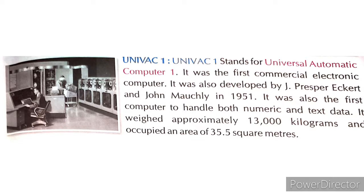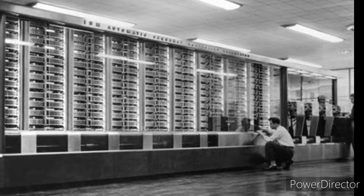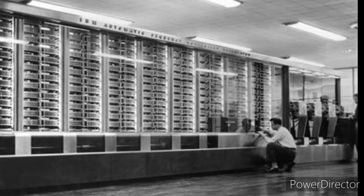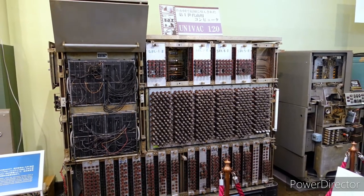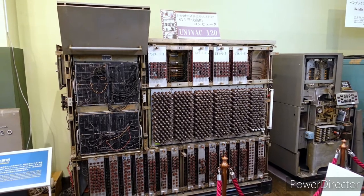UNIVAC 1 stands for Universal Automatic Computer 1. It was the first commercial electronic computer, also developed by J. Presper Eckert and John Mauchly in 1951. It was the first computer to handle both numeric and text data. It weighed approximately 13,000 kg and occupied an area of 35.5 square meters. The UNIVAC 1 was designed as a commercial data processing computer, used to calculate company payrolls, sales records, and analysis of sales performance. The UNIVAC could perform 90,000 transactions per month.